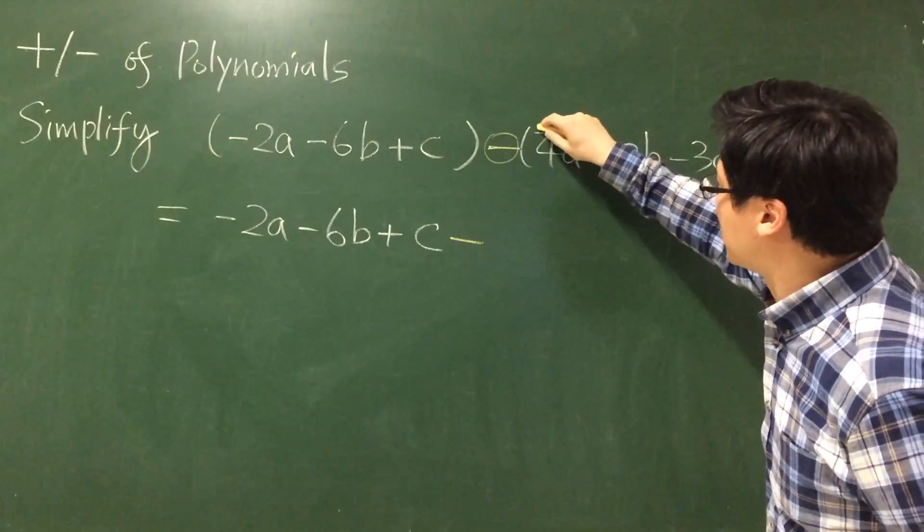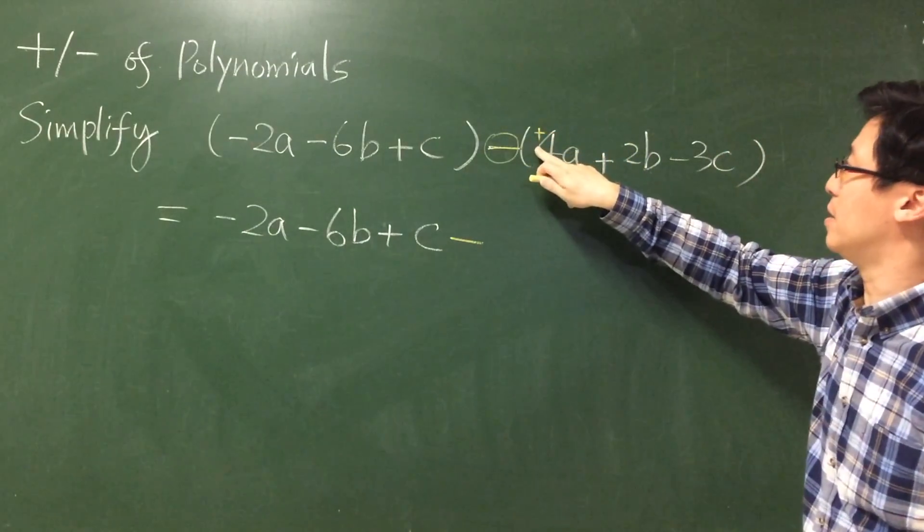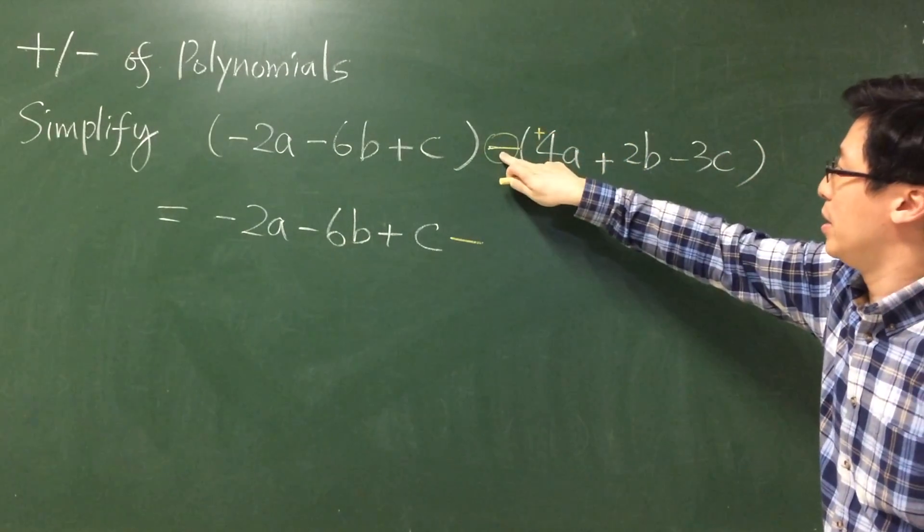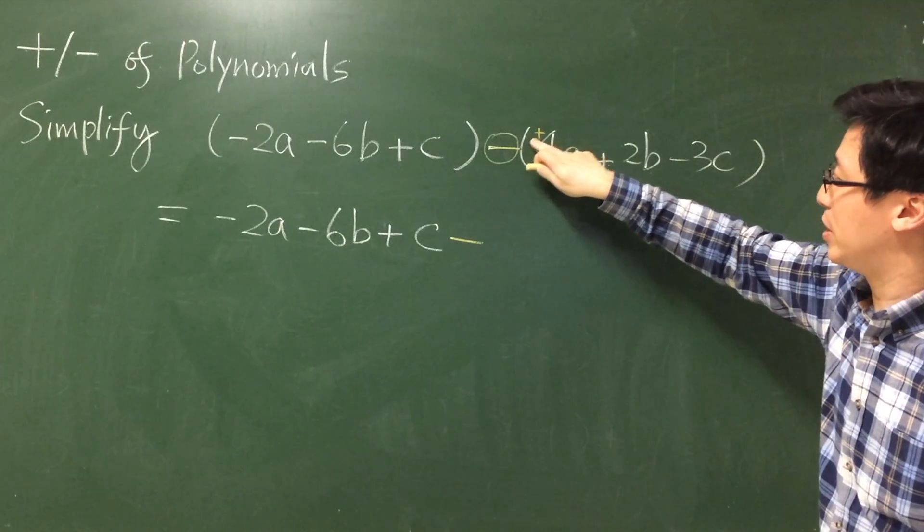Remove the bracket. So there is a hidden plus 4a here, negative, and then you have a positive.